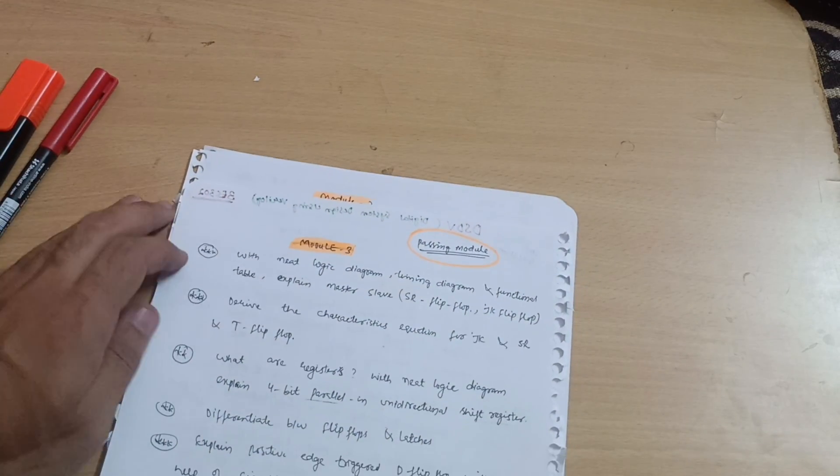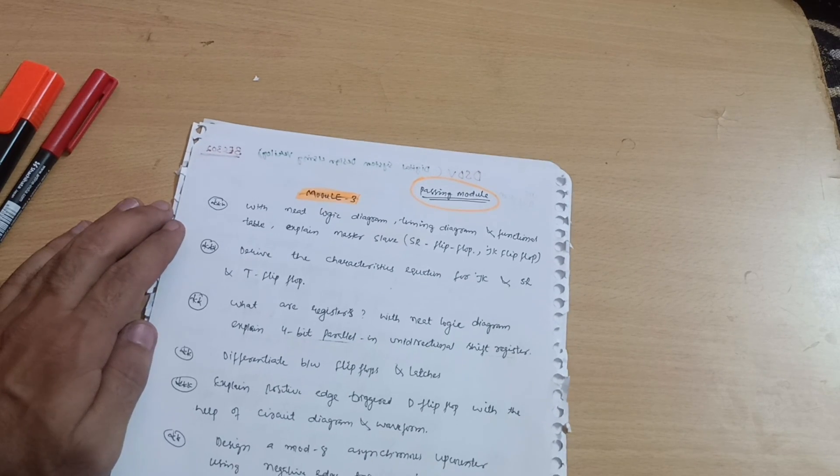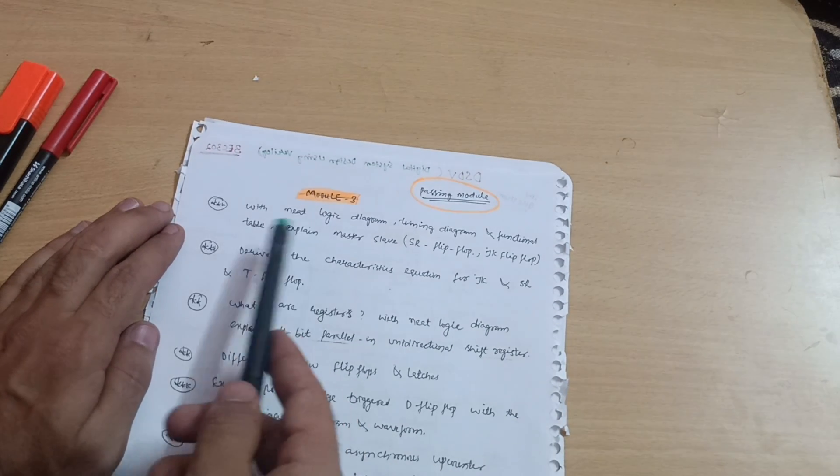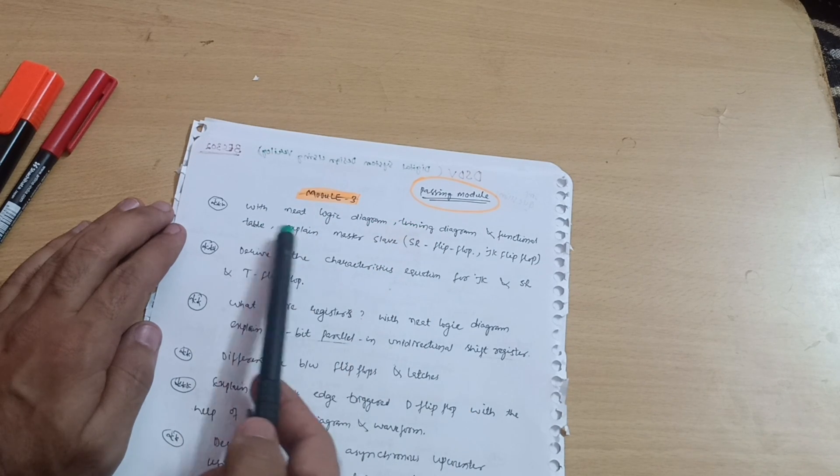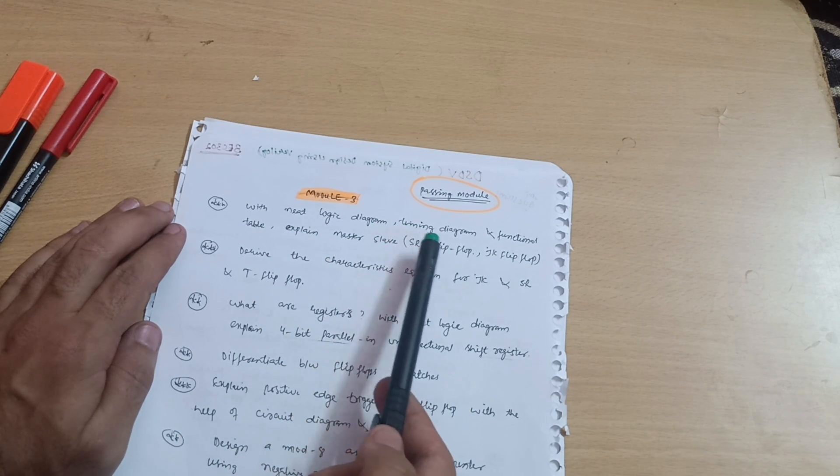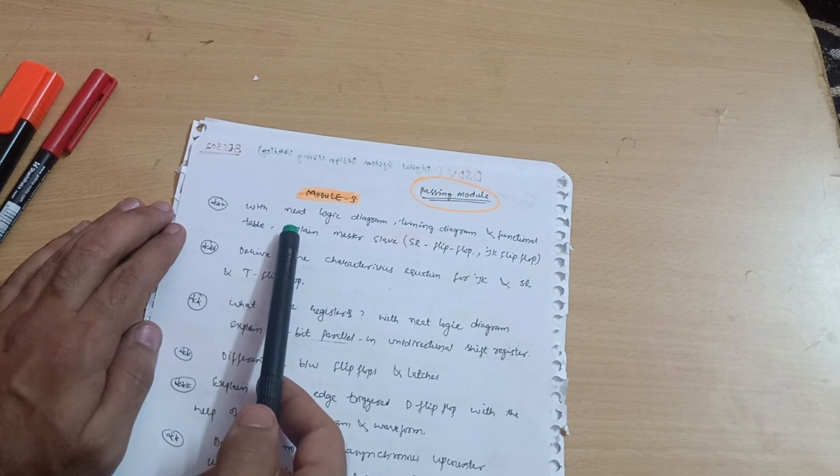Module 3 is your passing module. You can easily get at least 14 or 15 marks if we just cover this much portion. Whichever I will discuss with neat logic diagram, timing diagram, and functional table: explain Master-Slave SR flip-flop or sometimes they will give JK flip-flop. This is the first super important question.